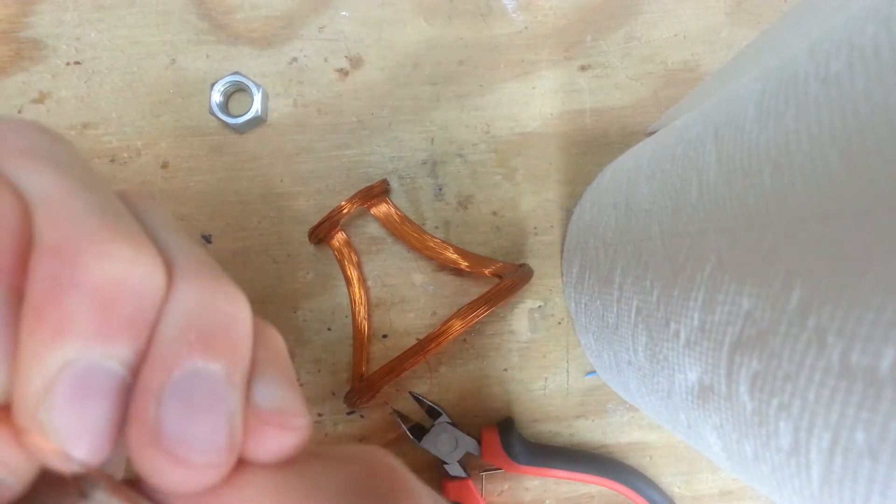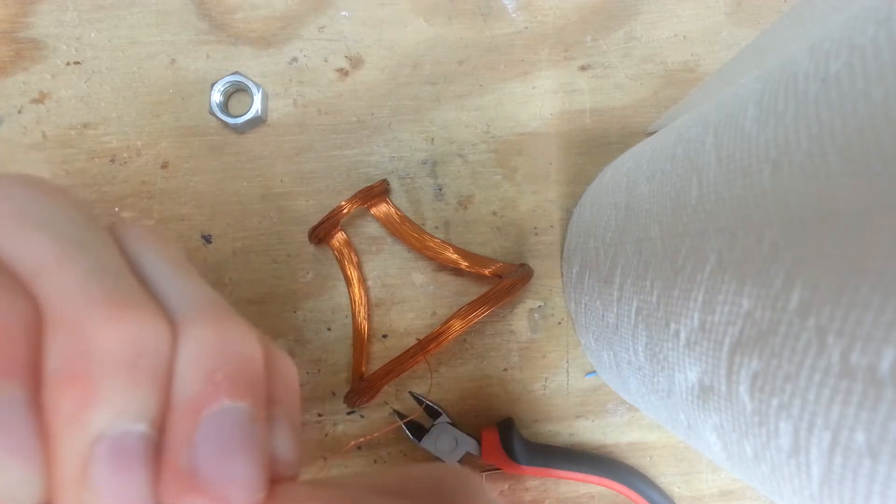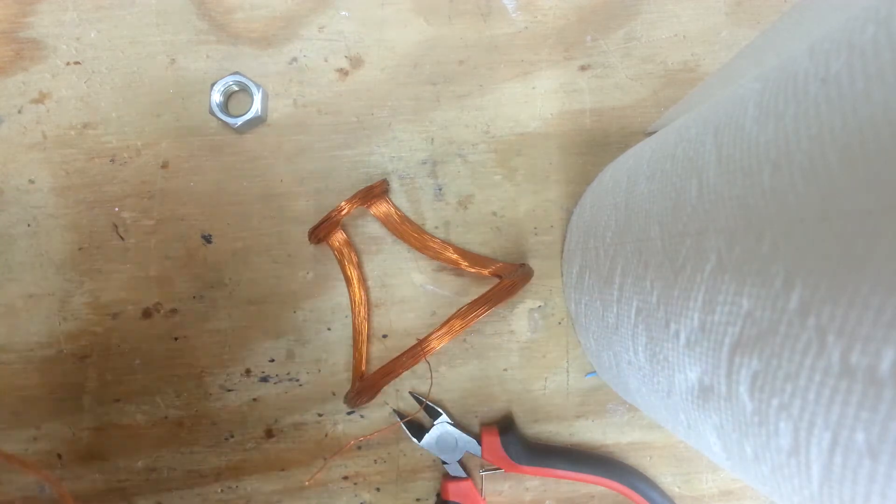I just need to strip the varnish off one end. Well, both ends of the wire. Take it out of the chuck.